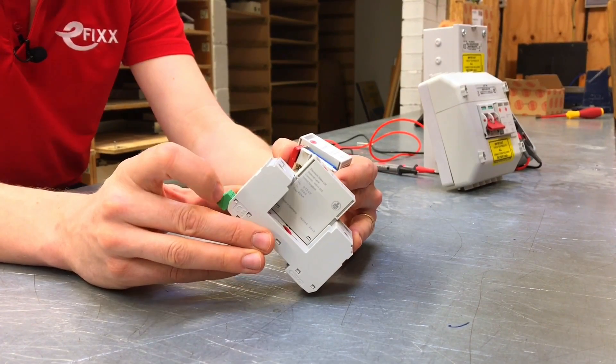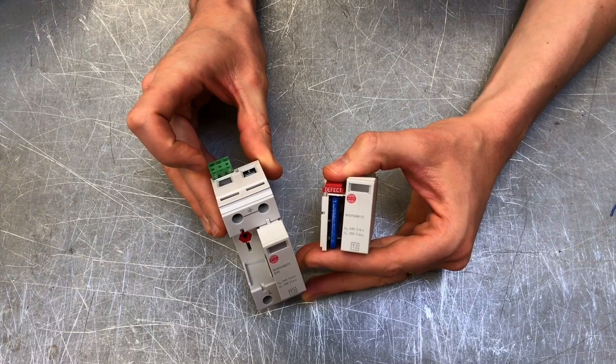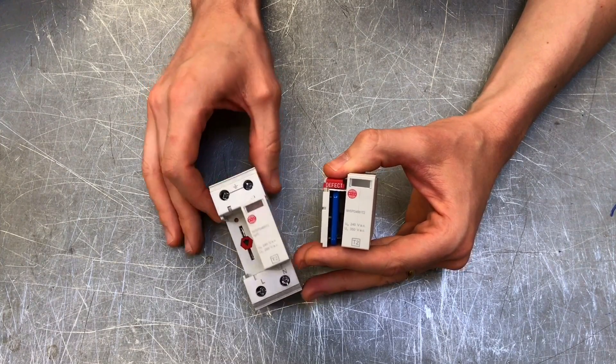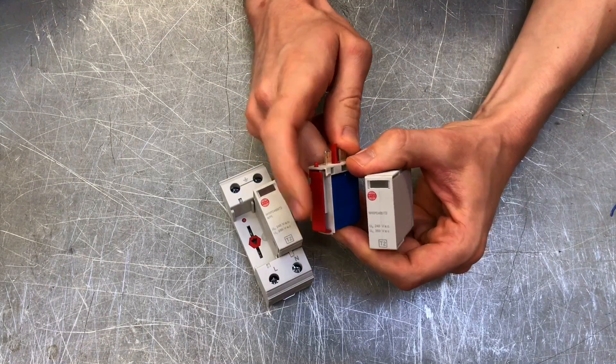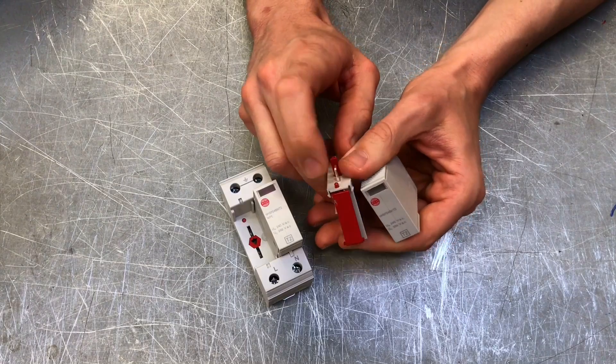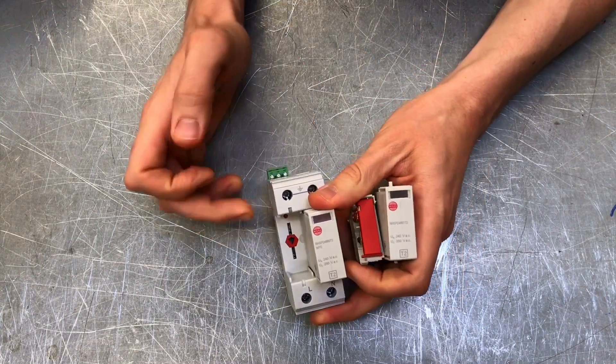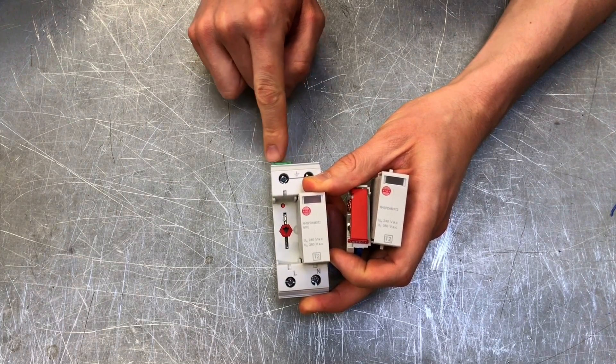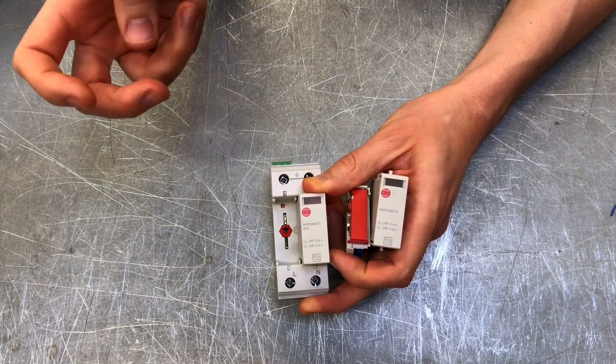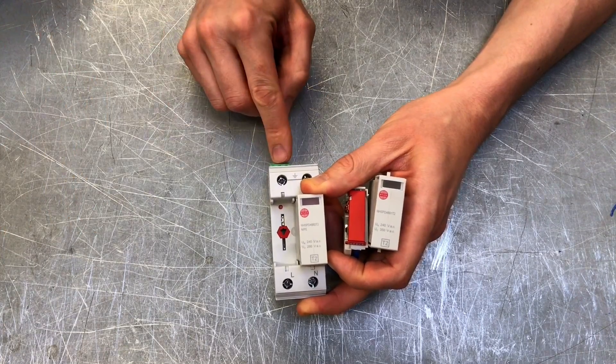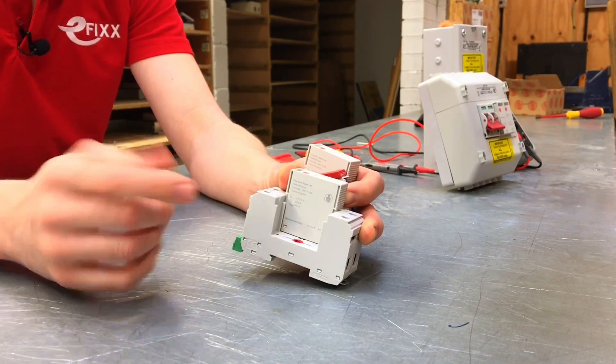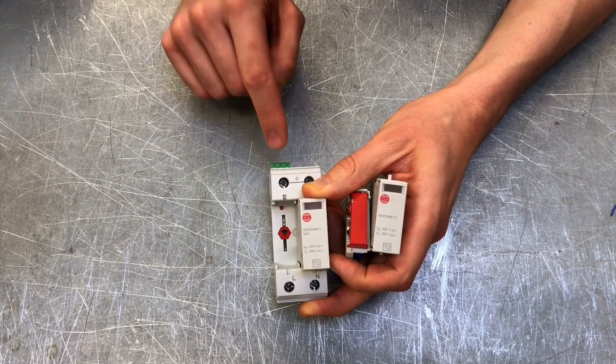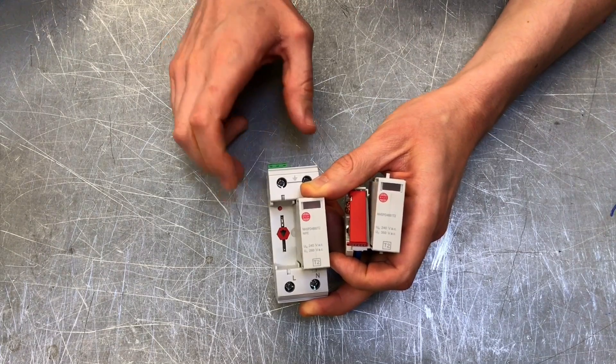That is possible because we've got on top of our surge protection device here an auxiliary contact. We can feed a signaling circuit through that. When this reaches end of life and springs forward, this little nib on the back will also shoot in and no longer push down on this tiny red dot you can see in the back. When that happens, it operates a micro switch which will send a signal through here to maybe a remote indicator, a lamp on a panel board, maybe an audible signal, or even into a SCADA system.